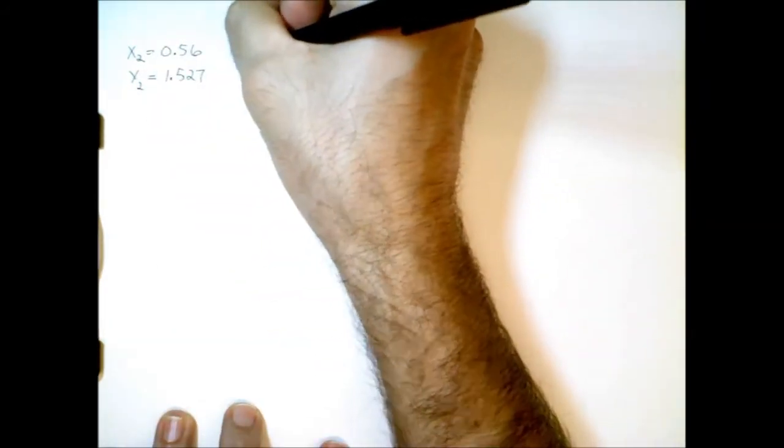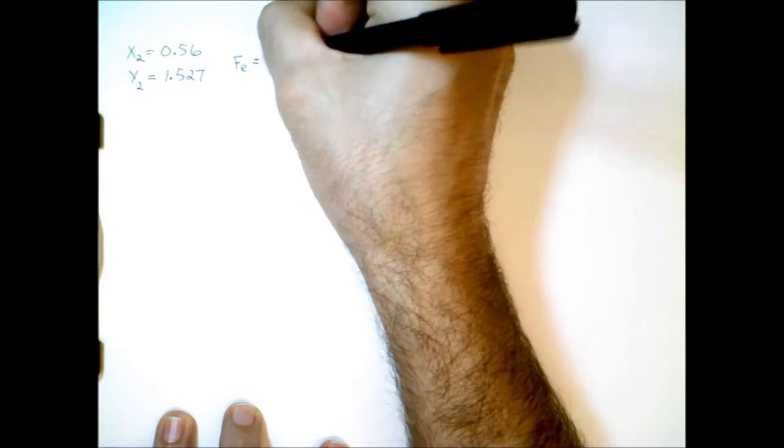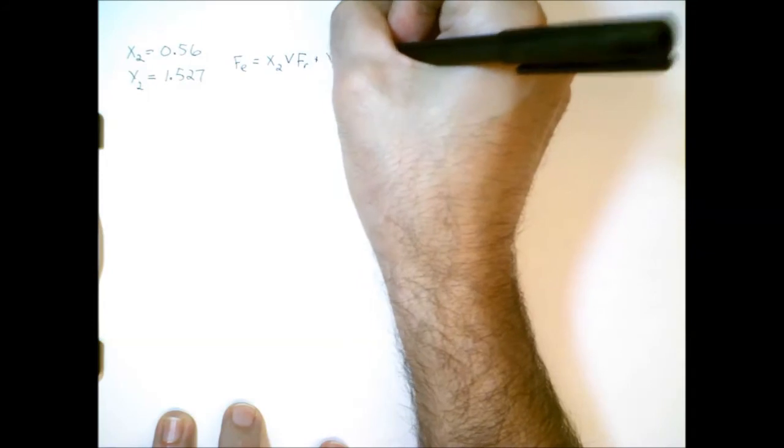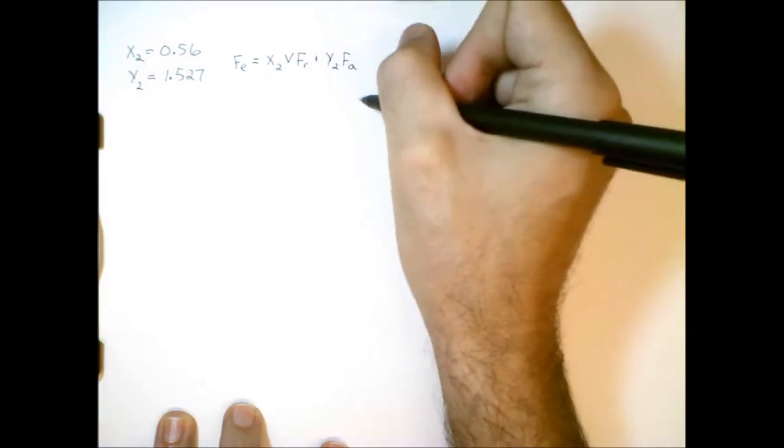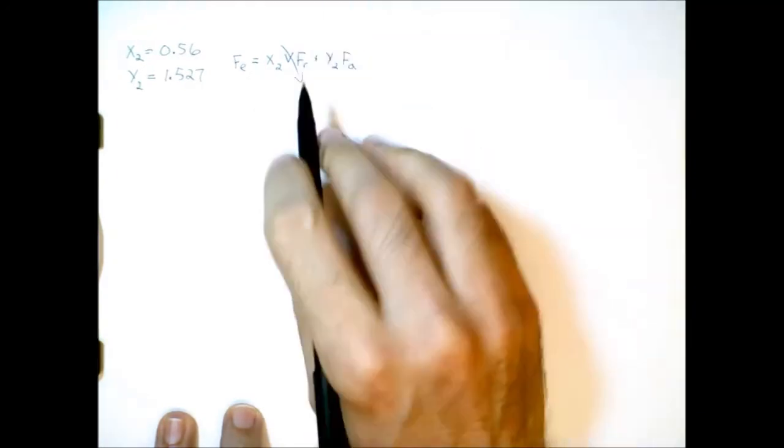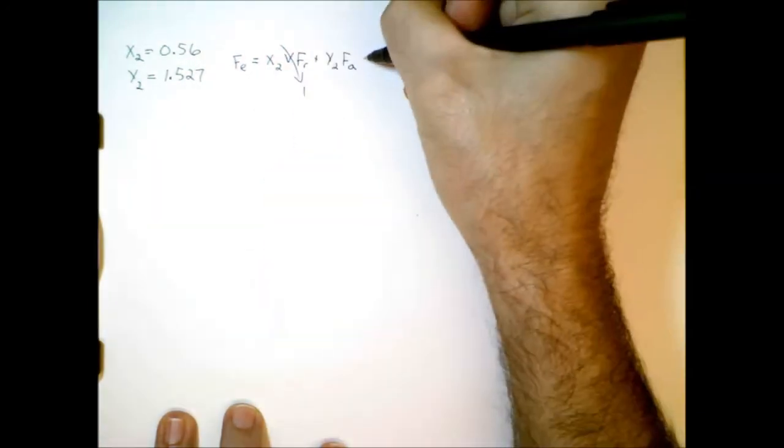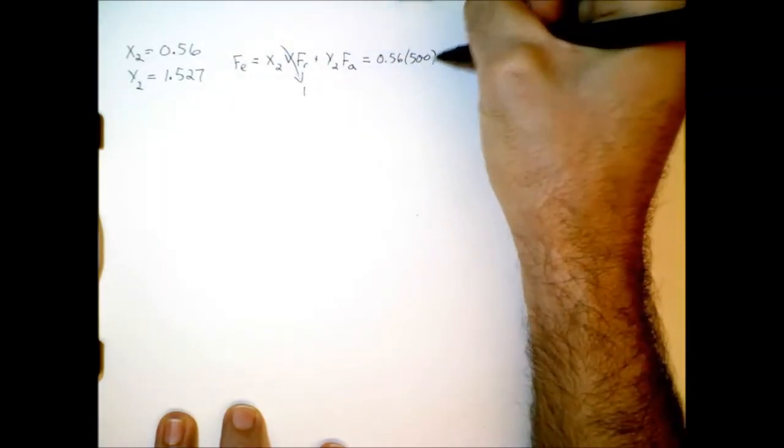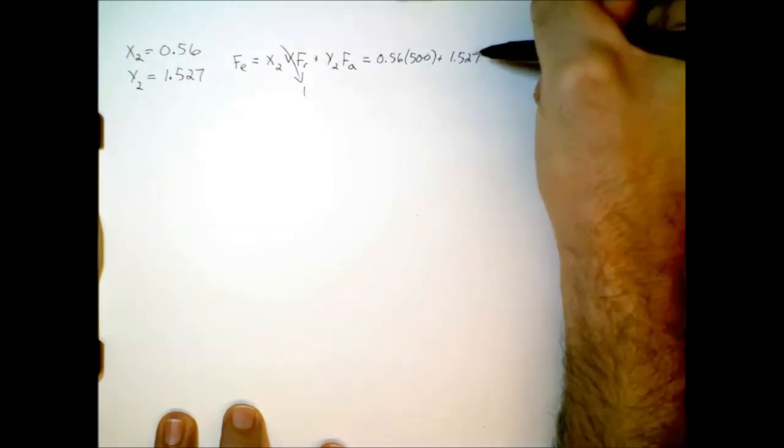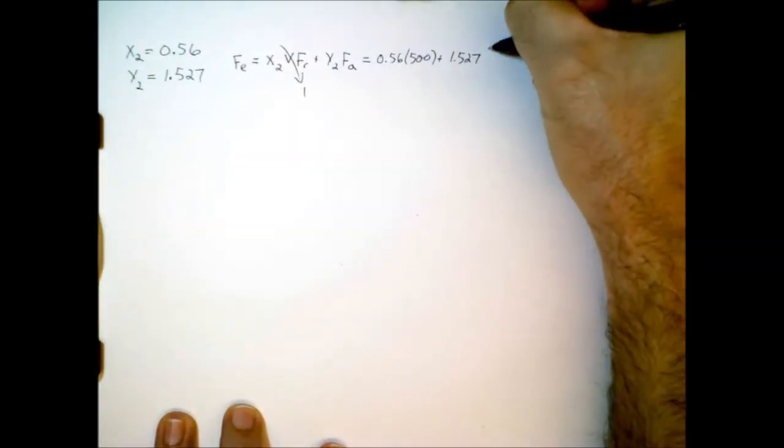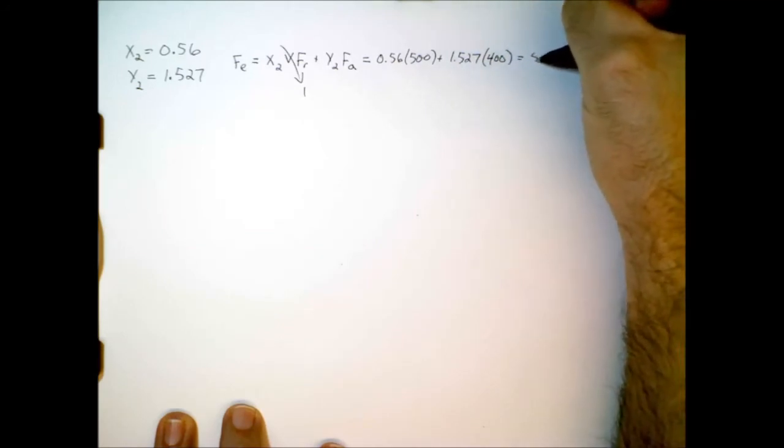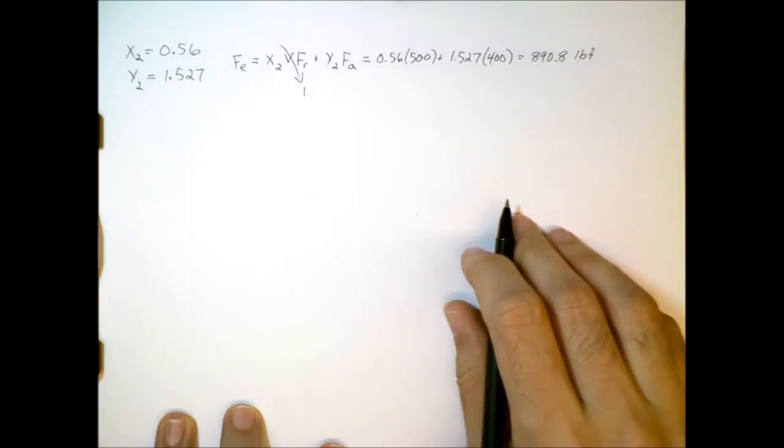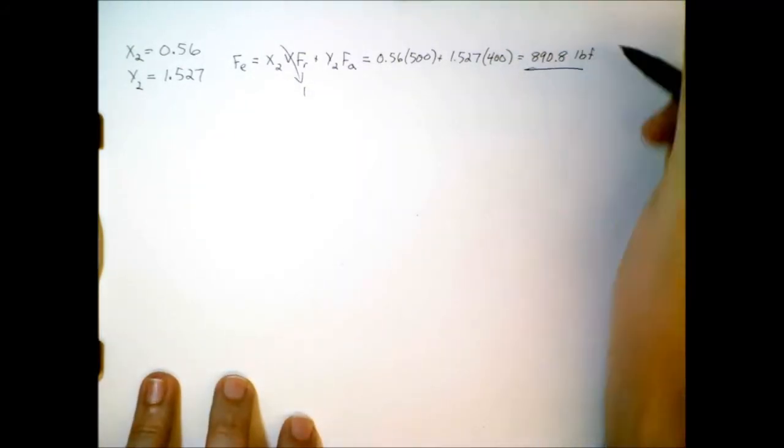And then the equivalent radial load, that's going to be equal to x2 times v times the radial force plus y2 times the axial, or thrust force. Remember, v is equal to 1 in this case. Put the numbers in. 0.56 times 500 plus 1.527, coming from this interpolation, times 400 is equal to 890.8 pounds. Okay. That's really just the first step.